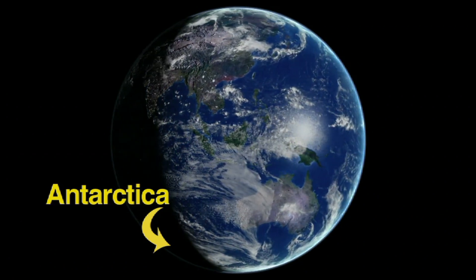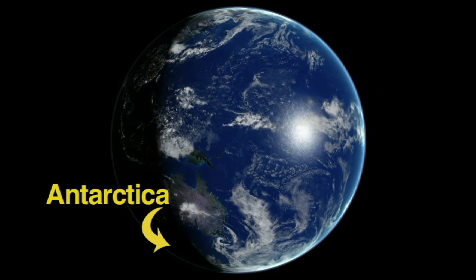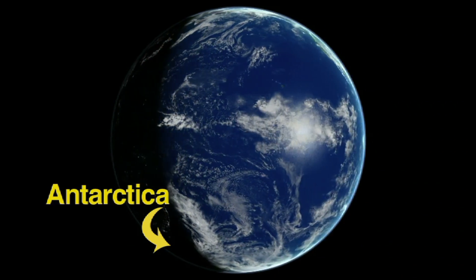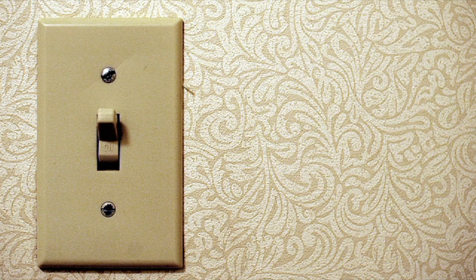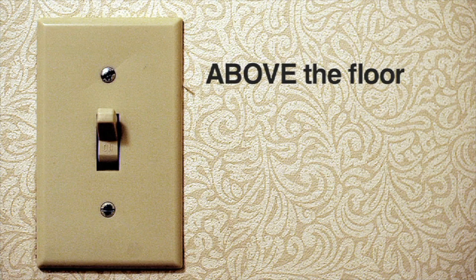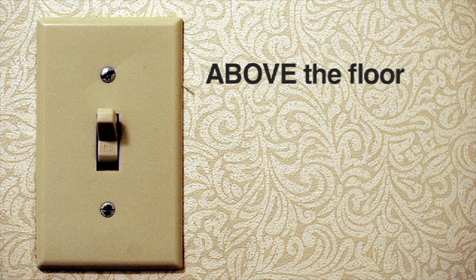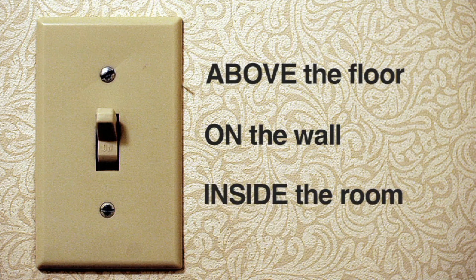The position of an object could be stated in different ways, but each could be correct. For example, the position of a light switch could be described in several ways: the light switch is above the floor, the light switch is on the wall, the light switch is inside the room.